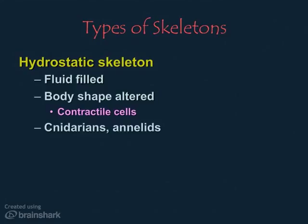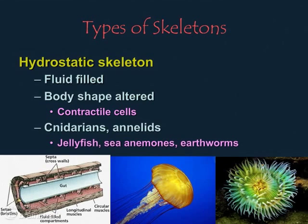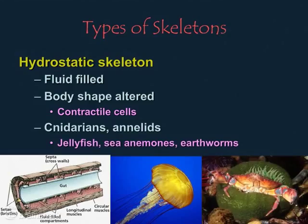We see hydrostatic skeletons in cnidarians and annelids such as jellyfish, earthworms, and sea anemones. In the last picture on the right we see a sea anemone open, waiting for its prey to happen by. Then in the next picture we see how the contractile cells have worked to close the anemone up when it captured a crab.